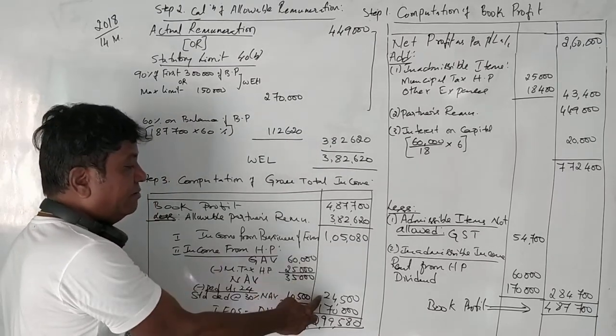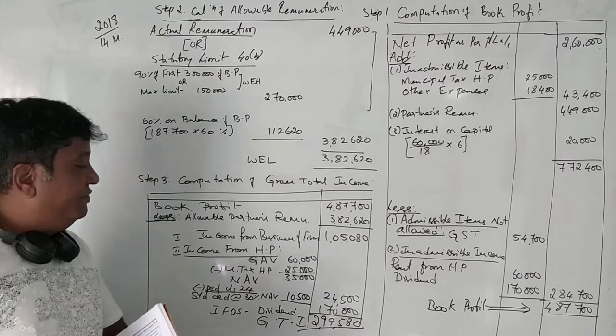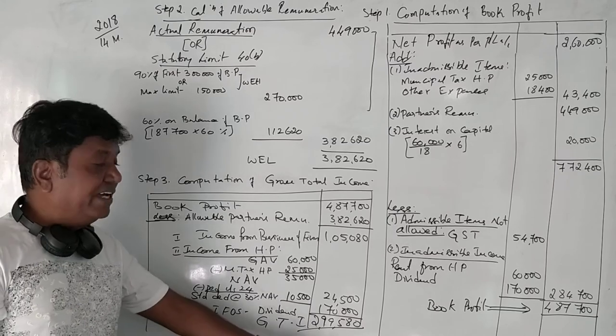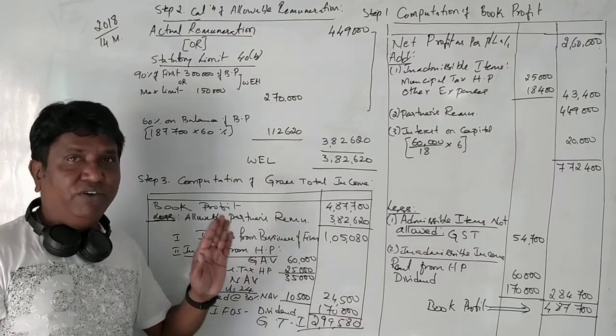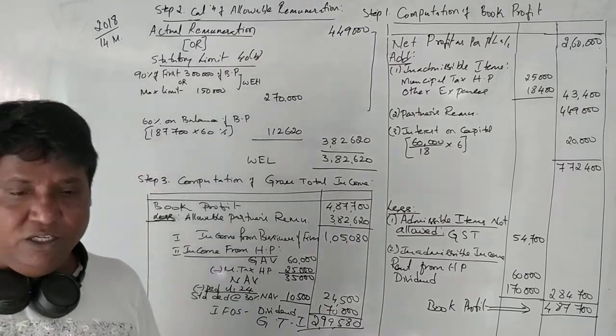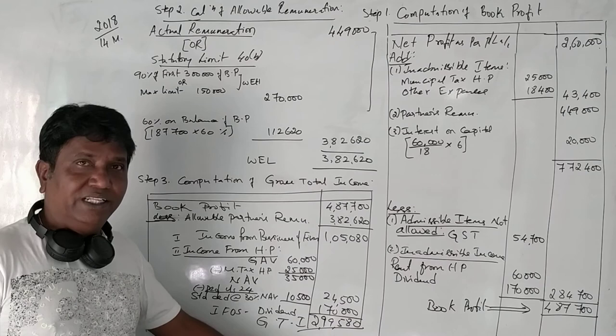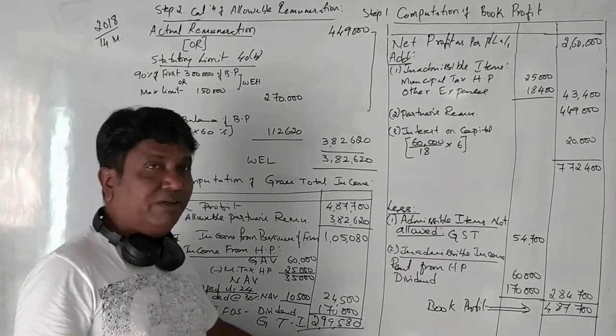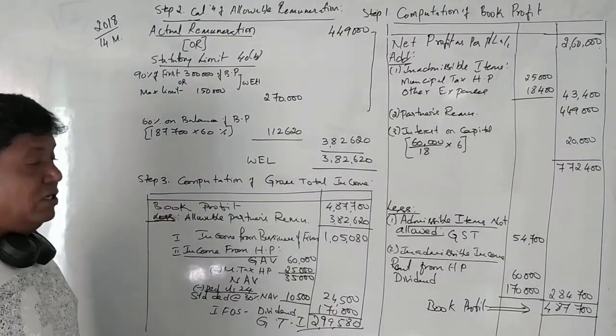Income from business, income from house property, income from other sources, all together, if you add, you get 2,99,580 rupees as gross total income of the partnership firm. Got it, guys? If you want to calculate, you can calculate 30% tax on this plus 3% of cess as the total income is less than 1 crore rupees. That's all.